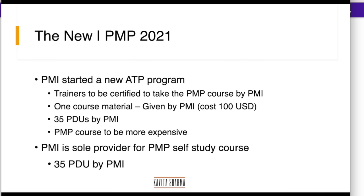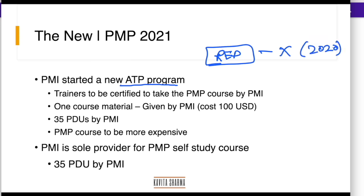PMI started a new ATP program some time back. It used to be called REP — Registered Education Providers. This is gone. Starting end of 2020, this program was disabled. Starting 2021, there is something called ATP — Authorized Training Provider Program. There are a few things which have changed with this ATP program coming in.